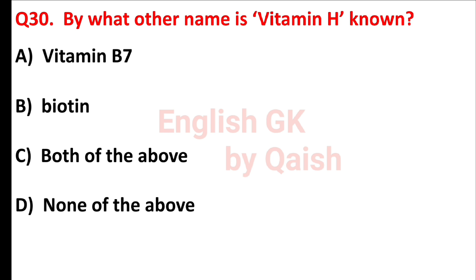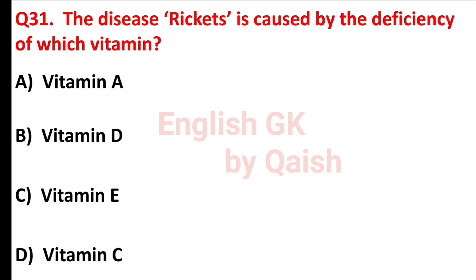By what other name is vitamin H known? Answer is option C, both of the above — biotin and vitamin B7. The disease rickets is caused by the deficiency of which vitamin? Answer is option B, vitamin D.